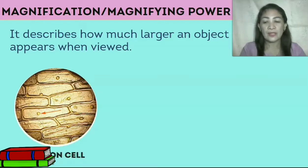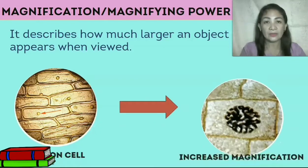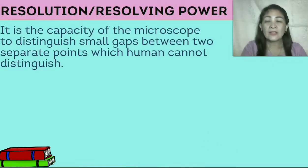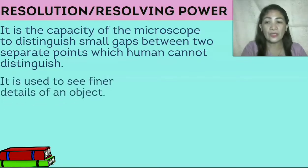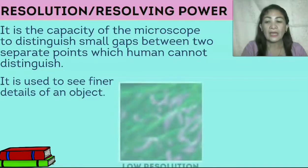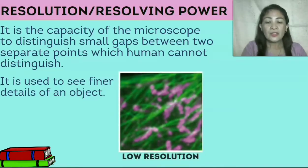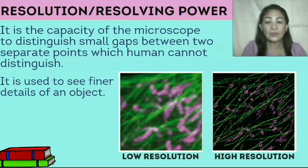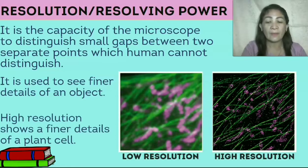Example: an onion cell. Observe the structure of an onion cell — as you can see, it is very small. If you want to see it better, you can increase its magnification. Next is resolution or resolving power. It is the capacity of the microscope to distinguish small gaps between two separate points which humans cannot distinguish. It is used to see finer details of an object. A high resolution image shows finer details of a plant cell.